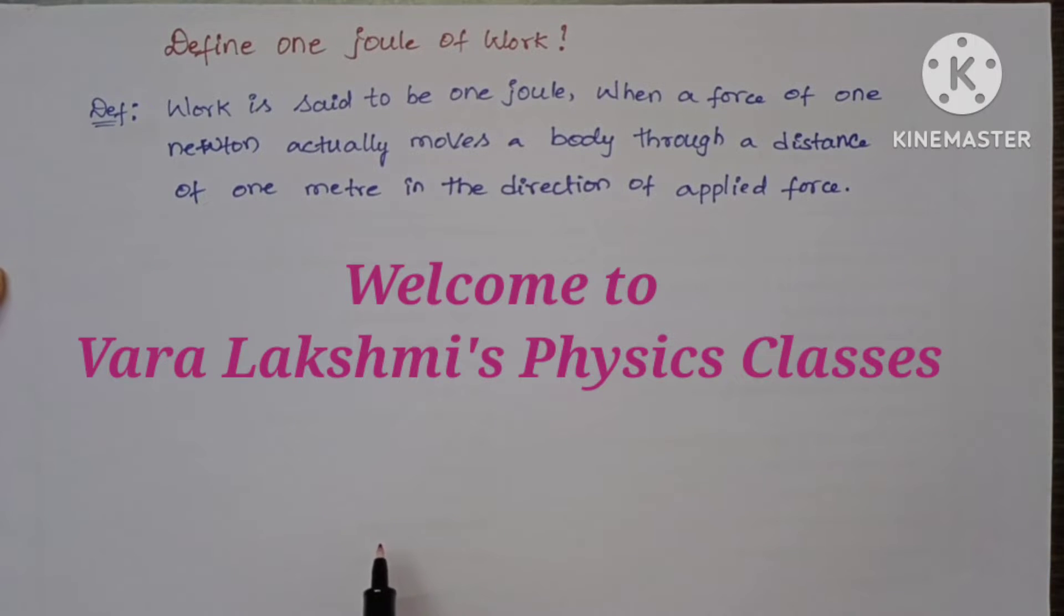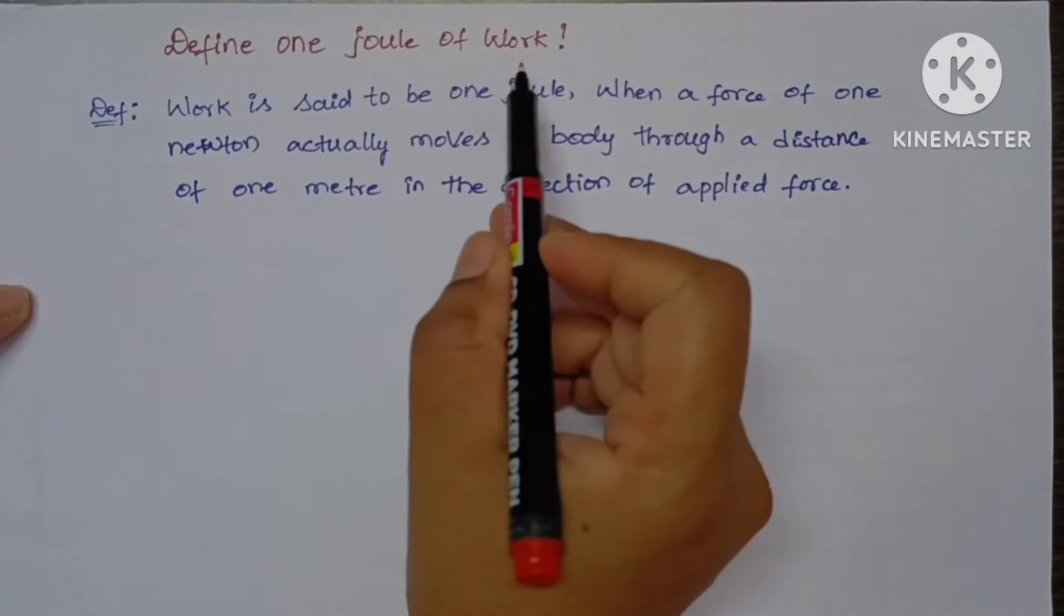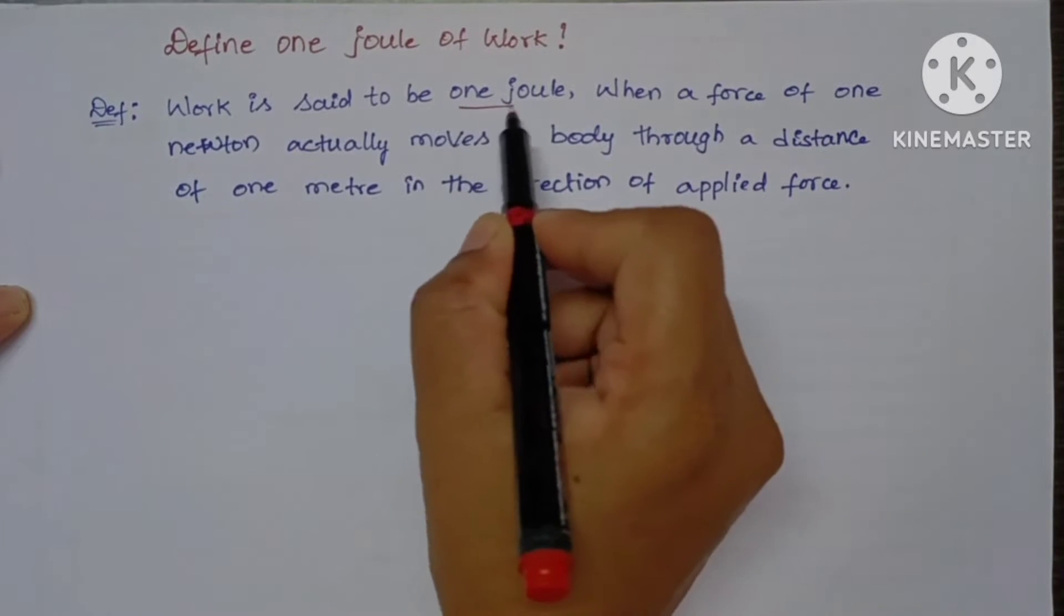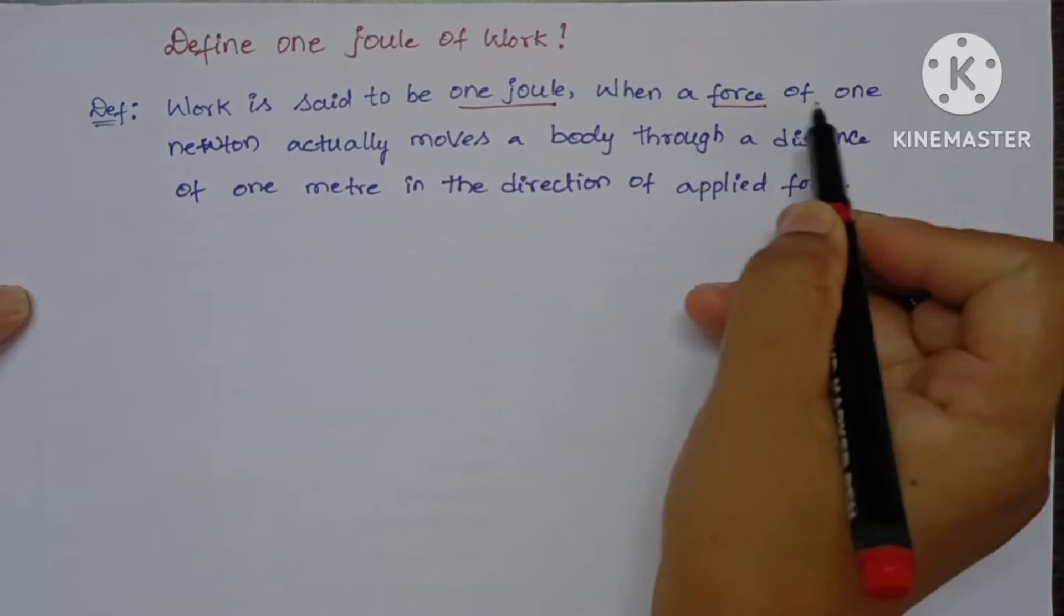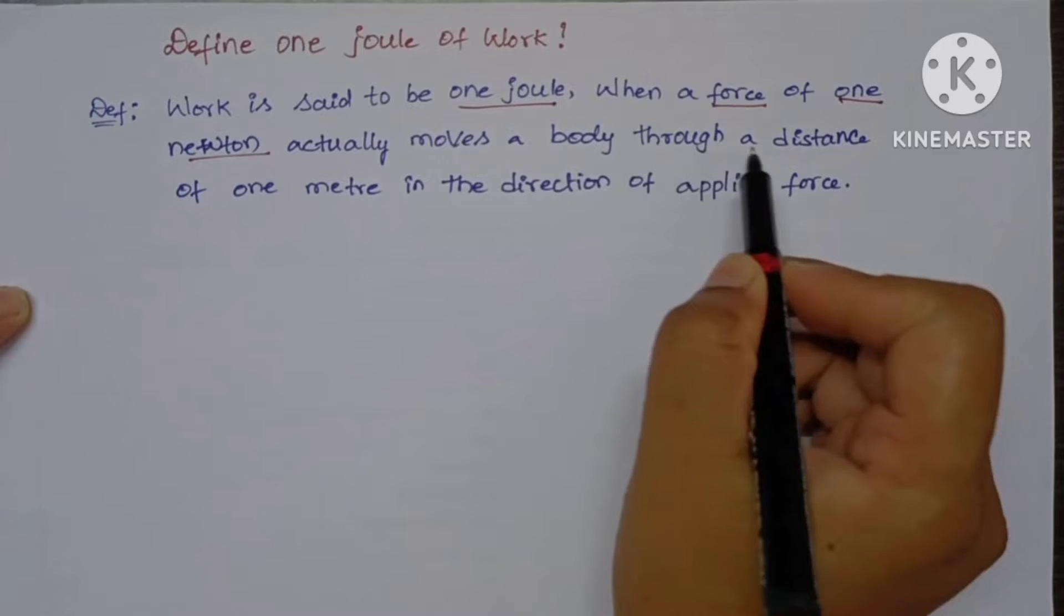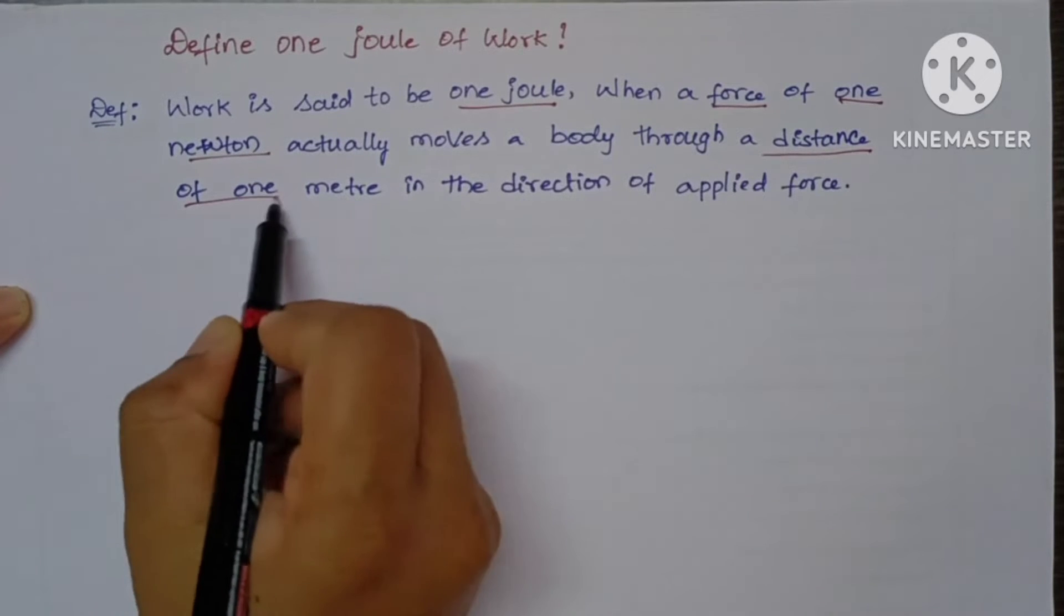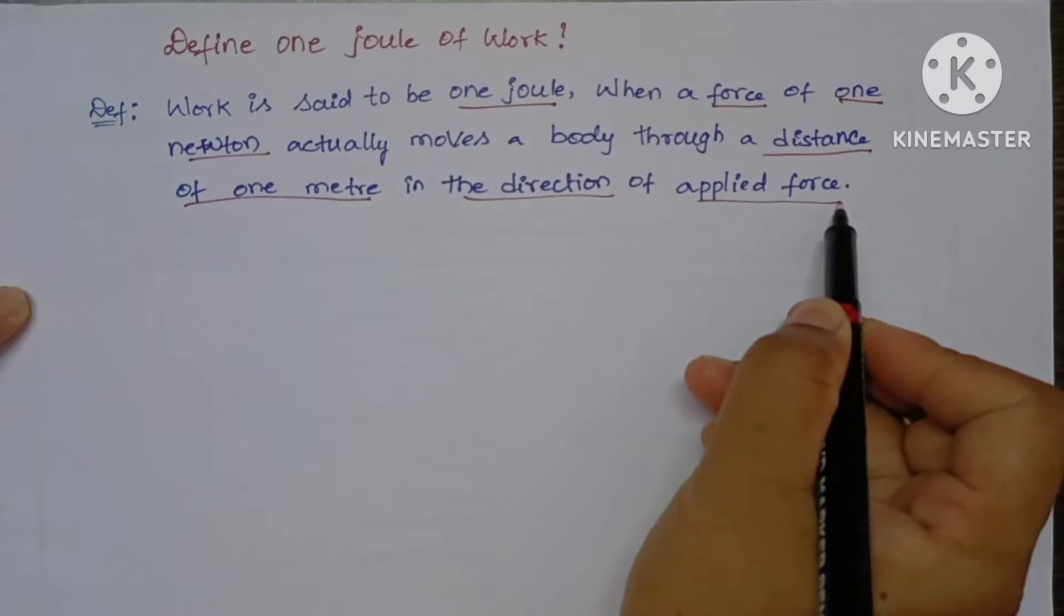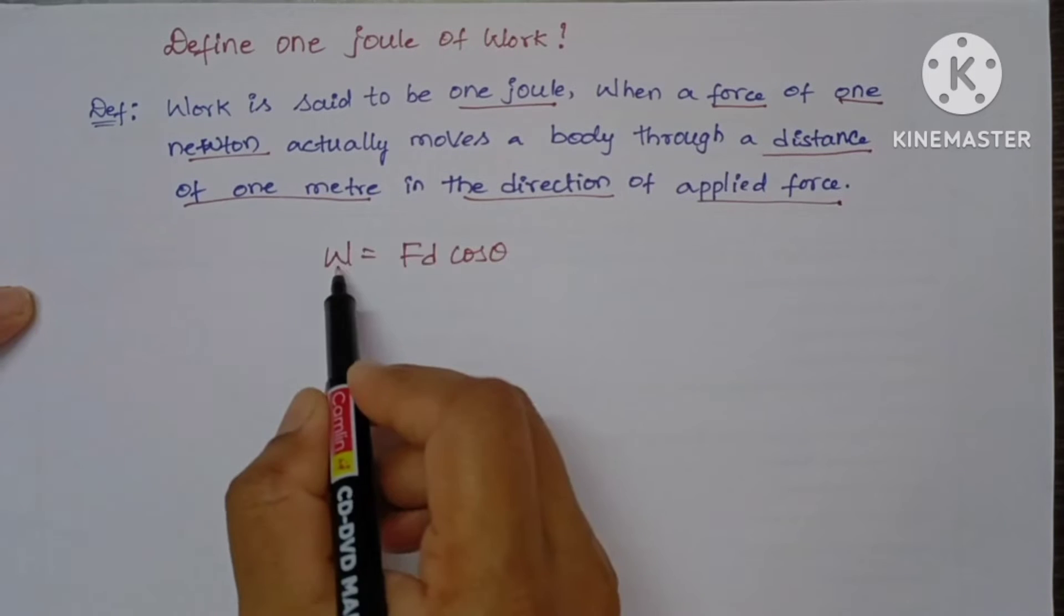Hi friends, welcome back to Lashmi's physics classes. Here you can see, define 1 joule of work. Let us see here what is said to be 1 joule: when a force of 1 newton actually moves a body through a distance of 1 meter in the direction of applied force.